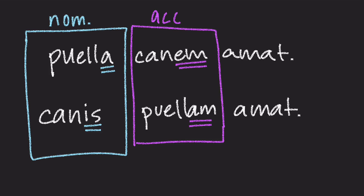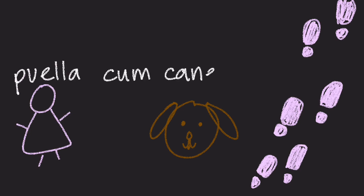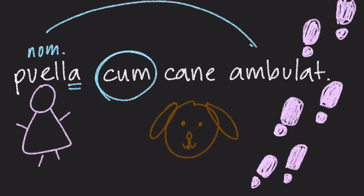But there are more than two cases. What are the functions of the other cases? Let's look at another sentence that has another case: Puella Kum Kanem Ambulat. We have Puella again, so we know it's the girl who's doing the action. Ambulat is her verb, meaning walking. So the girl is walking. But what do Kum and Kanem do in the sentence?